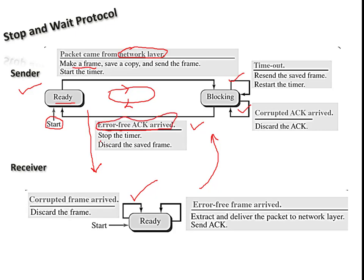The blocking state handles three cases. First, if the data is received properly, the receiver sends an acknowledgement. The event at the blocking state is 'acknowledgement received,' and the action is to stop the timer and send the next data. Second, if there is a timeout or a corrupted acknowledgement is received, the blocking state discards all and resends a copy of the previously sent frame.